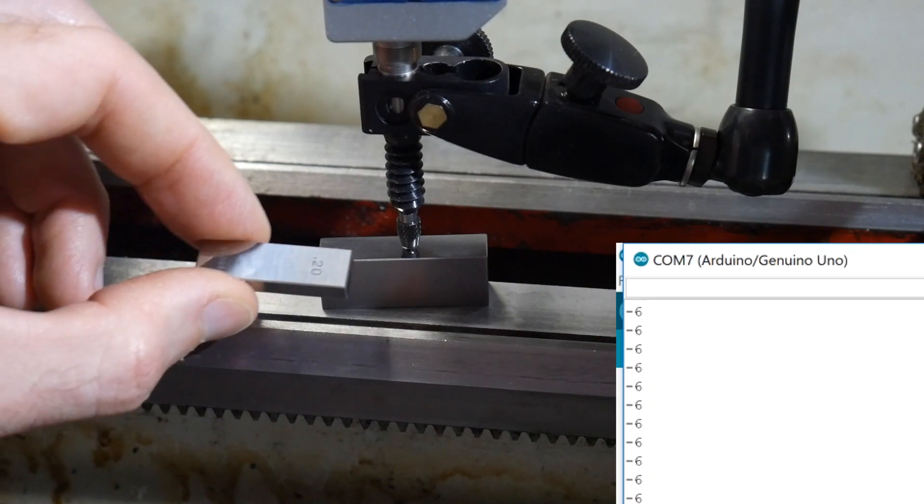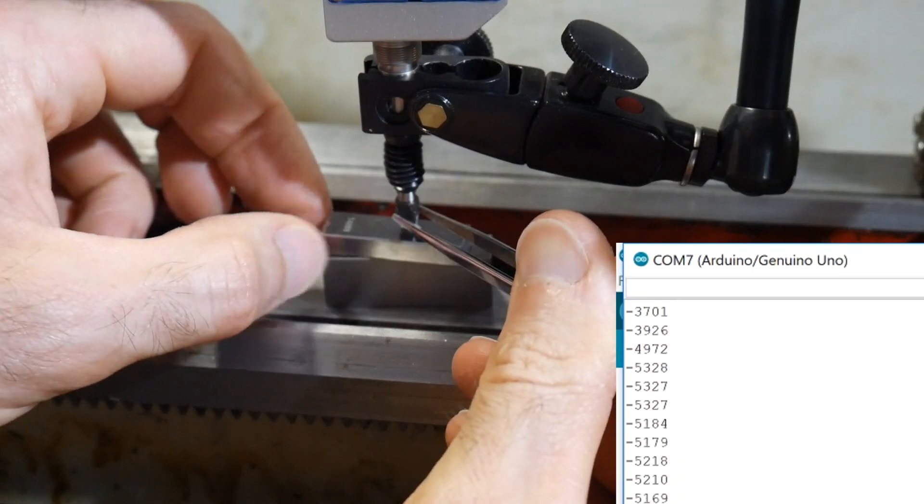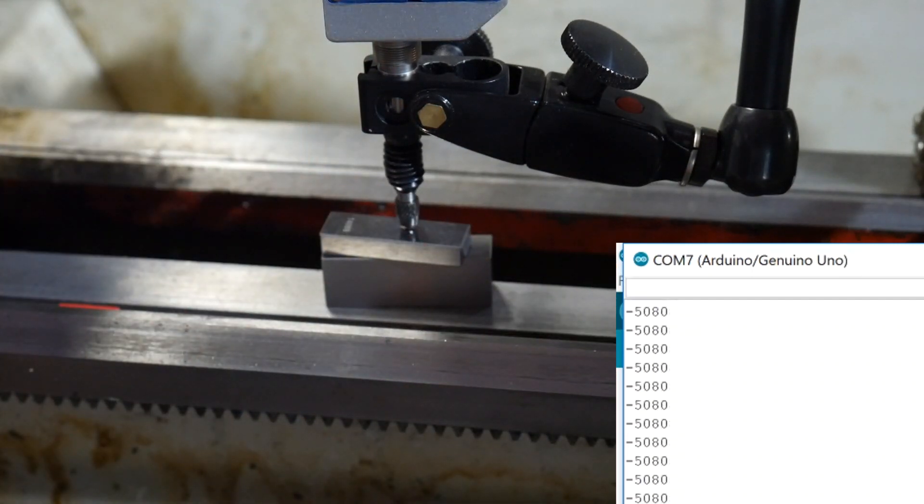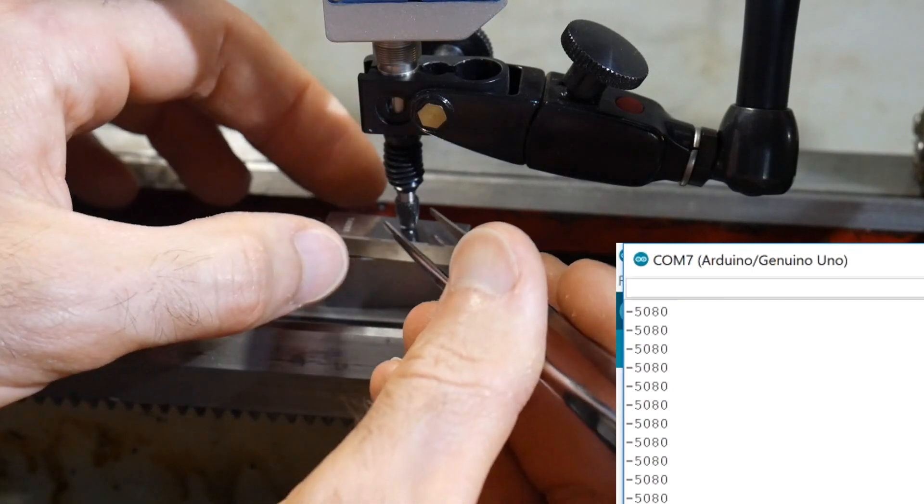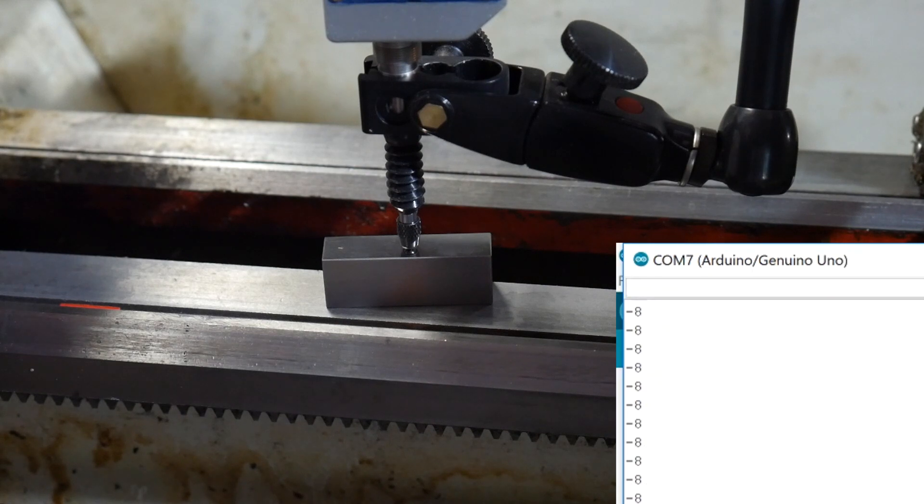This is 0.2 inches, so we should be getting about 5080. So that is bang on, except that we were minus six before. So it's still within our margin, and minus eight. So it's repeating reasonably well on there.